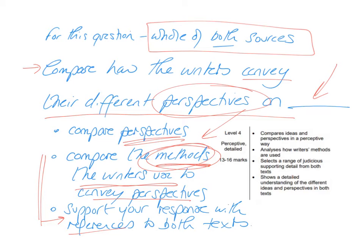Support your response with references to both texts, either by quotation or by direct reference. Some methods you can quote precisely — metaphors, similes, alliteration, hyperbole, statistics. Others, like the repeated use of lists, are harder to quote directly, but your reader needs to know the specific detail from the text you're hanging your point on. Make sure you balance references to both sources and don't just focus on one and ignore the other.